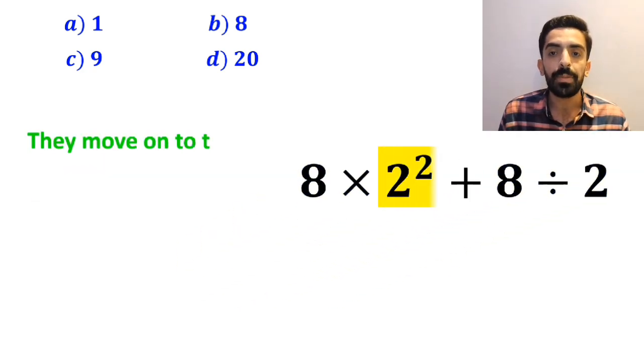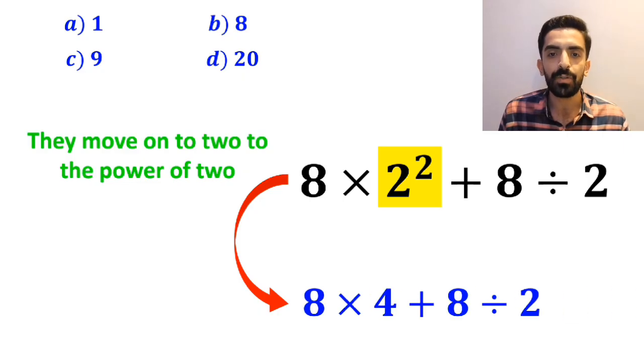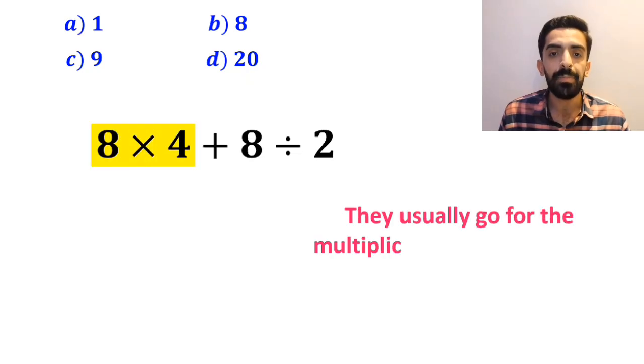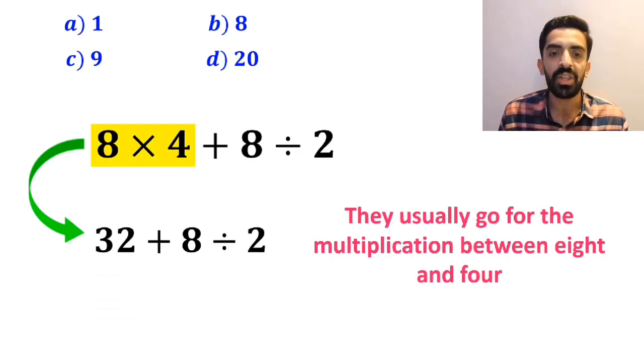Then they move on to 2 to the power of 2, which I've highlighted in yellow, and replace this expression with 8 times 4 plus 8 divided by 2. In the next step they usually go for the multiplication between 8 and 4 and replace this expression with 32 plus 8 divided by 2.